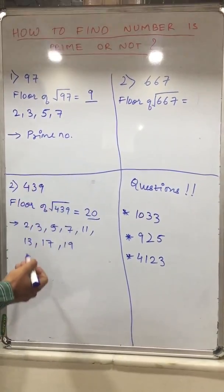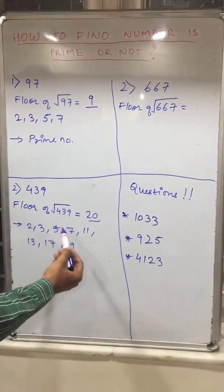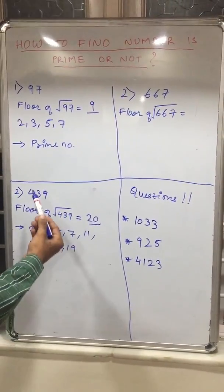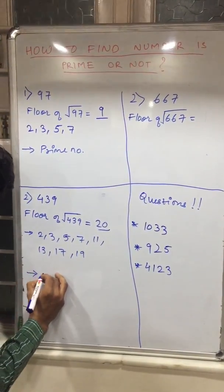So now one by one divide 439 by 2, 439 by 3, 439 by 5, 439 by 7, 439 by 11, it will not get divided. So therefore it is a prime number.